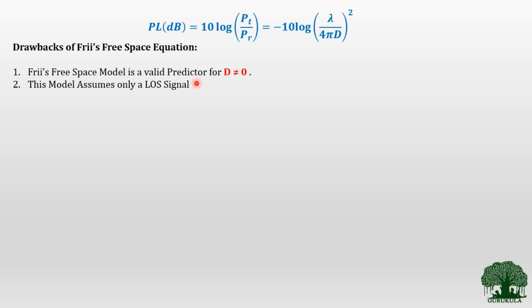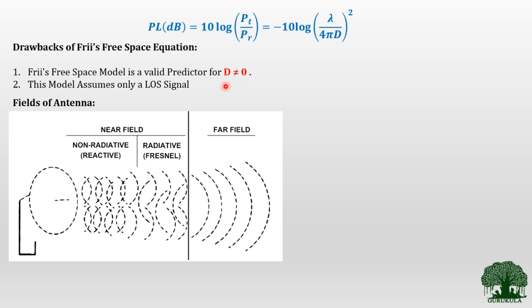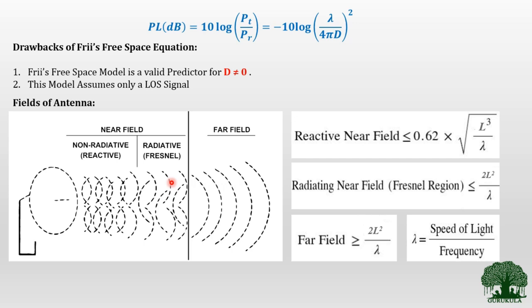The free space equation is a valid predictor only for D ≠ 0, where D represents the transmitter-receiver separation. So where should the receiver be placed? To answer this, we must go through the fields of an antenna. When considering a radiating antenna, the entire antenna region is broadly classified into two types: near field region and far field region. The near field region is further classified into reactive region and radiative region — this radiative region is sometimes called Fresnel's region. The far field region is sometimes called the Fraunhofer region.